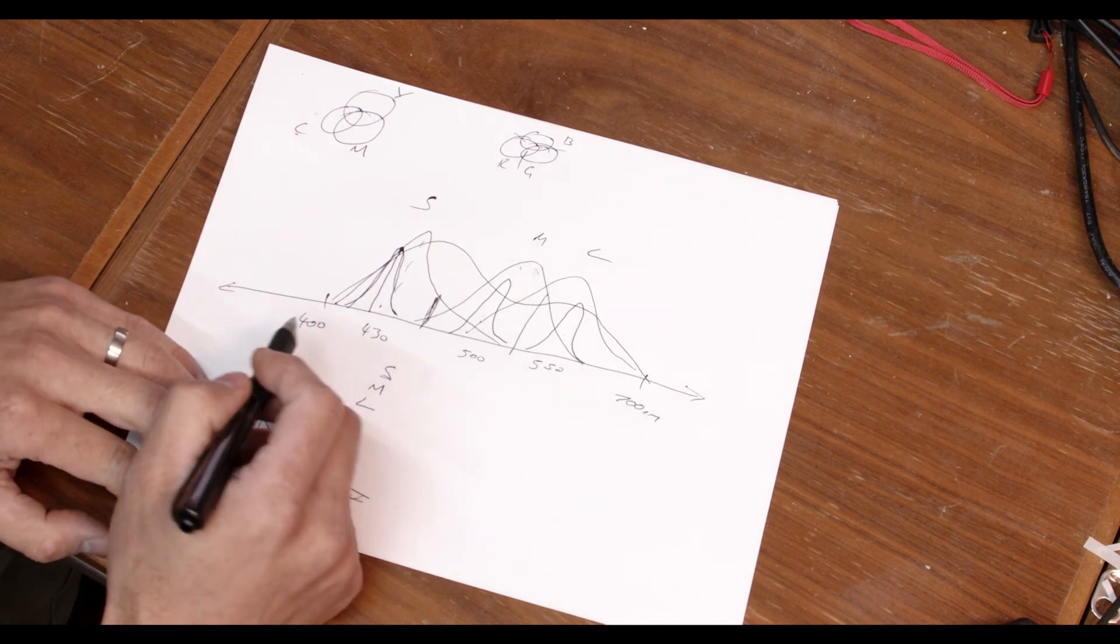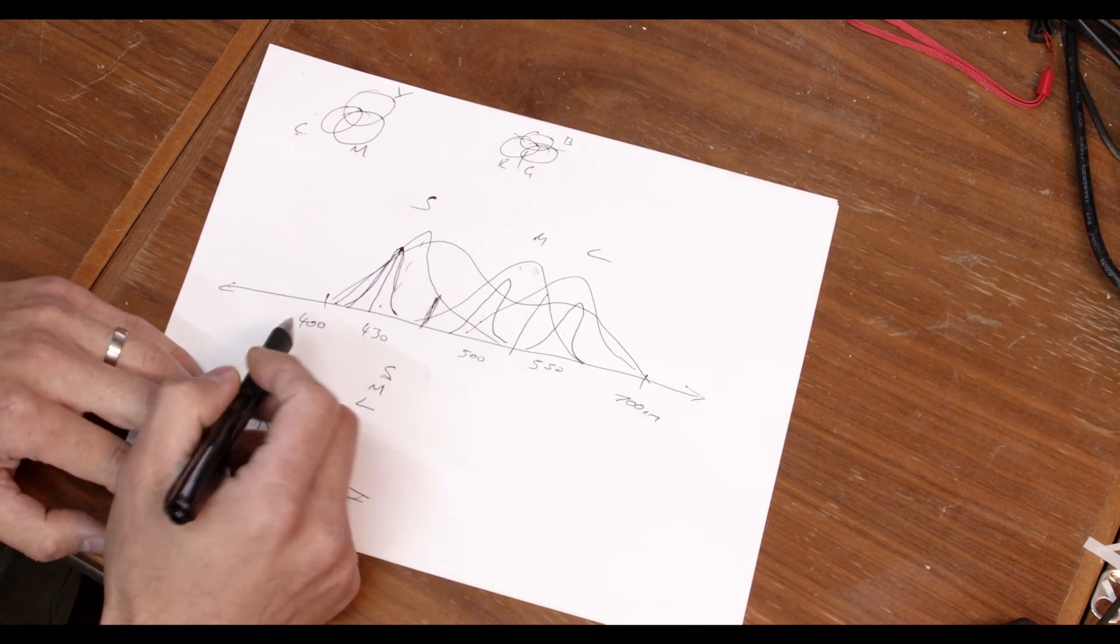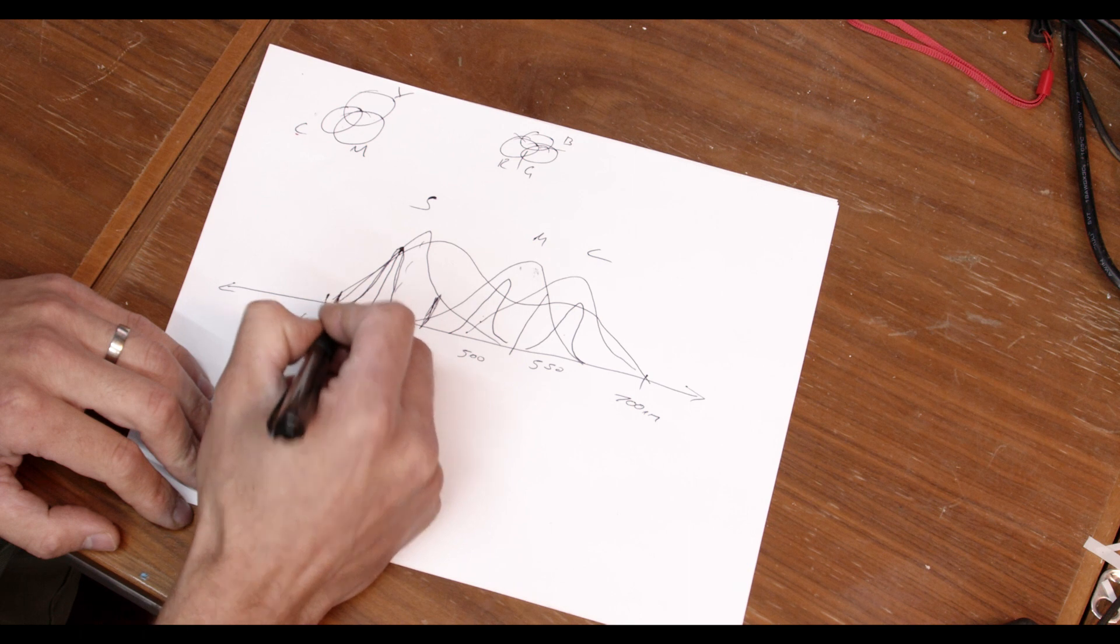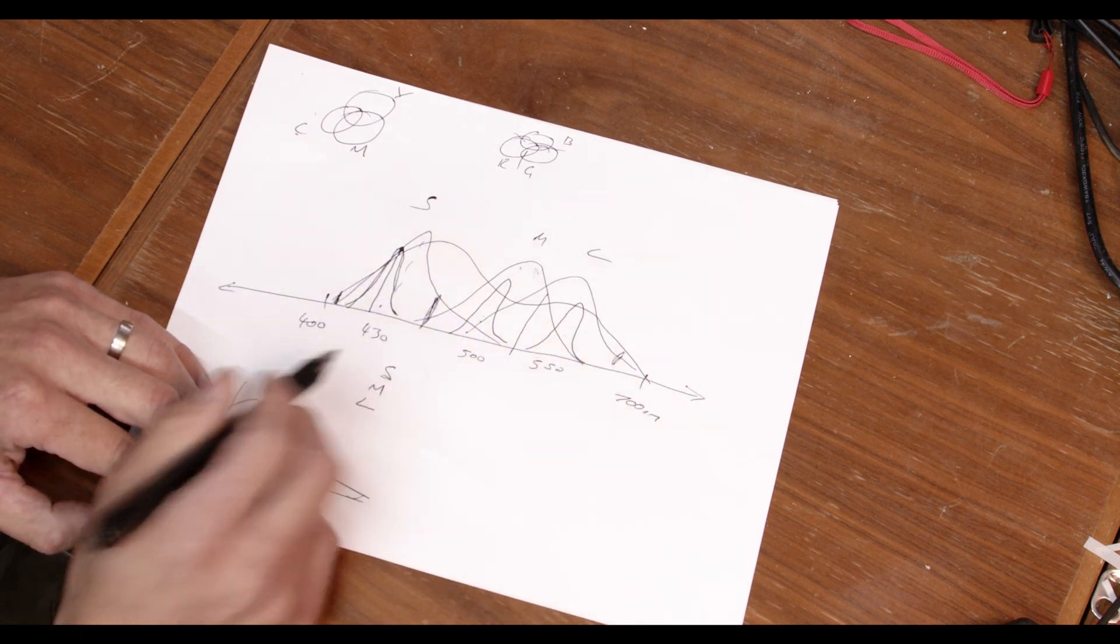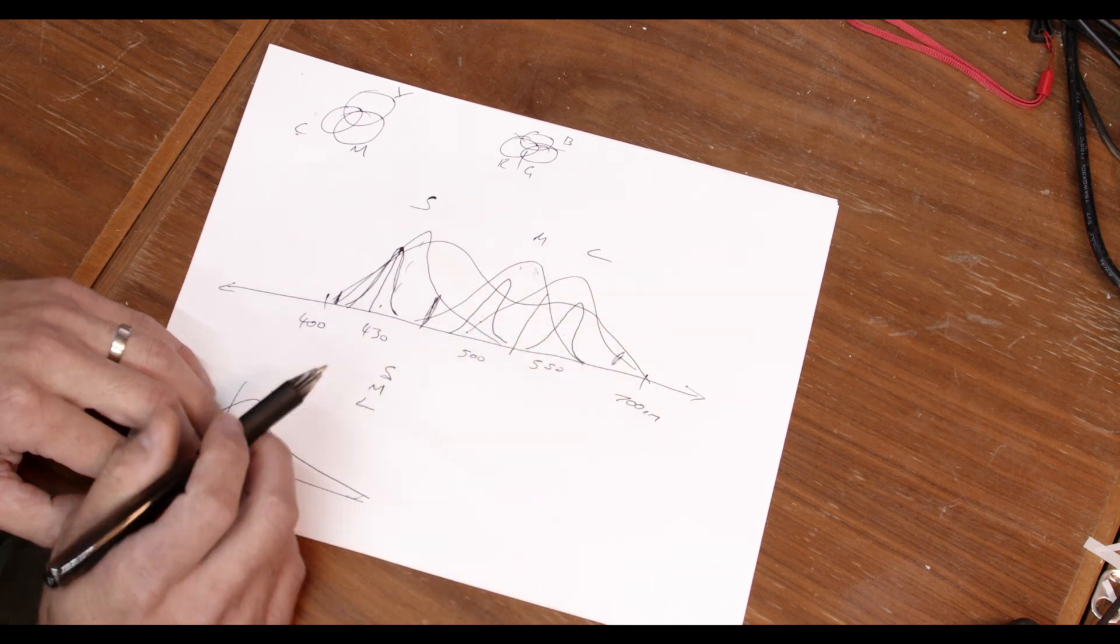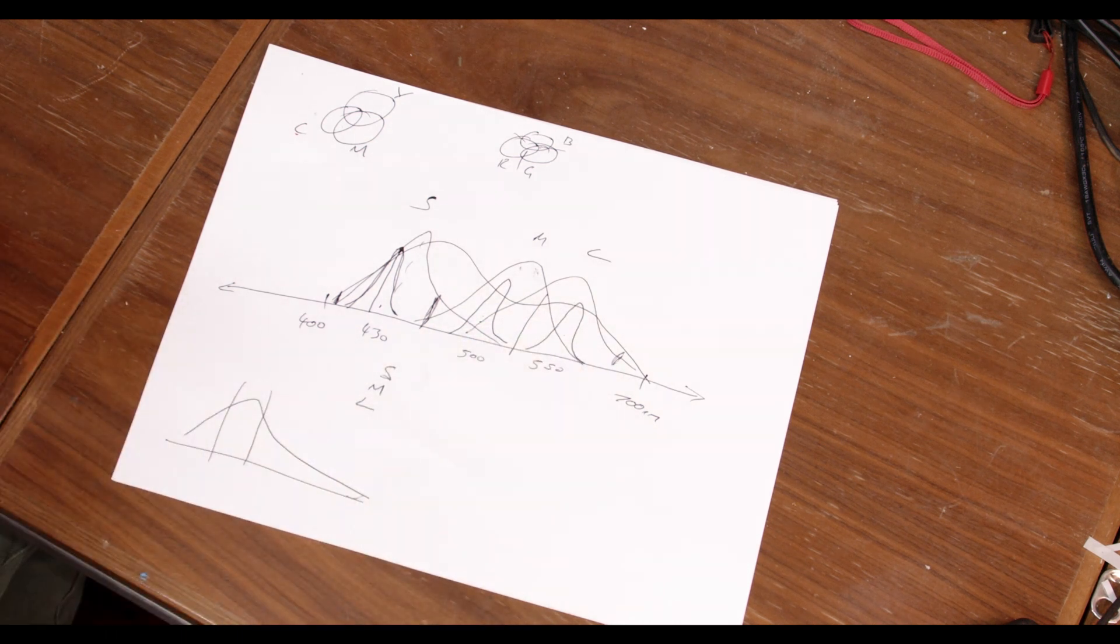Now, obviously, phosphors aren't perfect for generating color. You know, we can't generate colors down here if our phosphor is here. Likewise, we can't generate colors here if our phosphor is limited to this. But it provides a pretty natural way for computers and electronics to think about color.